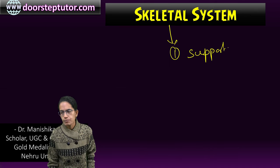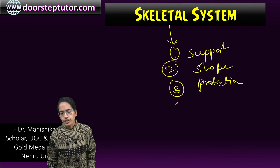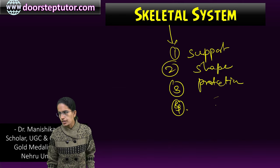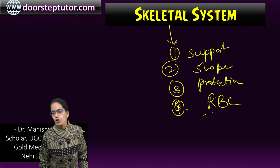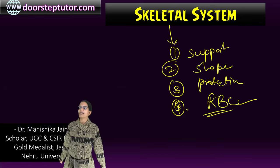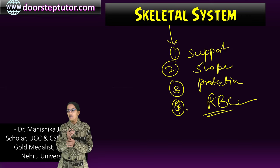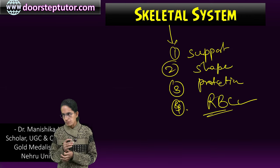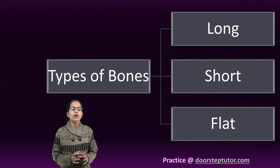The main functions of the skeletal system are: to provide support to the body, to maintain shape, to provide protection to the internal organs. It is a reservoir, it helps and supports in breathing, and it also helps in the formation of RBCs. This formation of RBCs occurs by the hemopoietic tissues which help in the formation of blood cells present in the bone marrow.